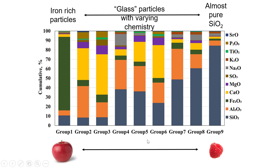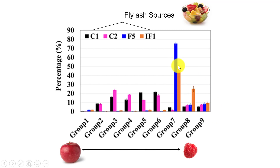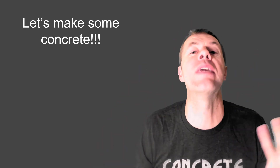Let me explain in a little more detail. Every group has a different chemical consistency. You can see group one has a lot of iron in it. Group nine has a lot of SiO2 — silica — and everyone in the middle has varying chemistry of different types. When I have Class C fly ashes, they have different amounts of these groups. Class C's have a lot of groups two through six for the most part, and Class F's have a lot of groups seven, eight, and nine. And as you can see, they might both be Class F's but have very different amounts of group seven — therefore they will have very different performance. So let's make some concrete and see what it's all about.